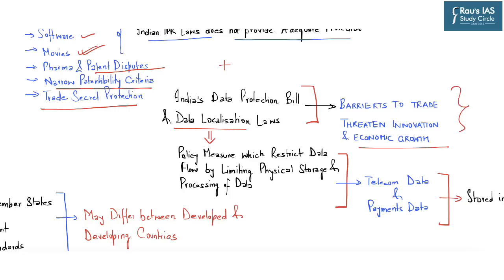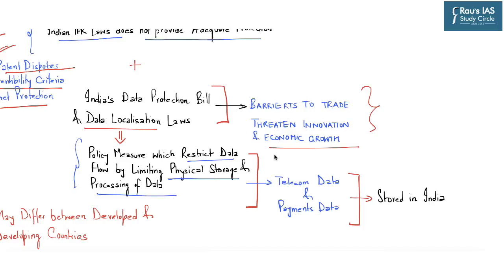Data localization laws refer to policy measures which restrict the flow of data outside the country — specifically limiting physical storage and processing of data. So far, telecom data pertaining to subscribers and payments data are supposed to be stored in India, though payments data can be processed abroad. The problem remains with respect to data localization laws. The data protection bill, which provides for data localization laws, according to the United States might act as a barrier to trade and threaten innovation and economic growth.